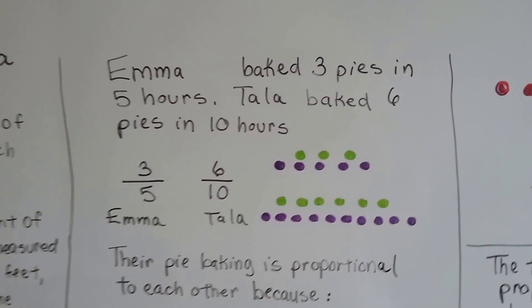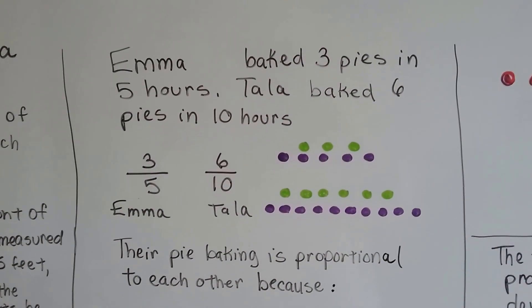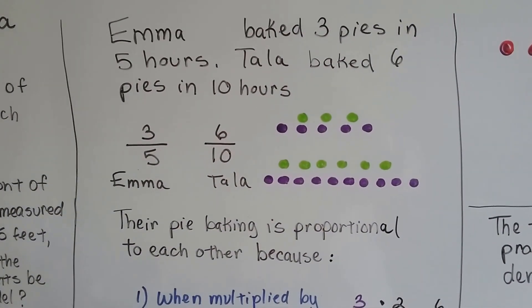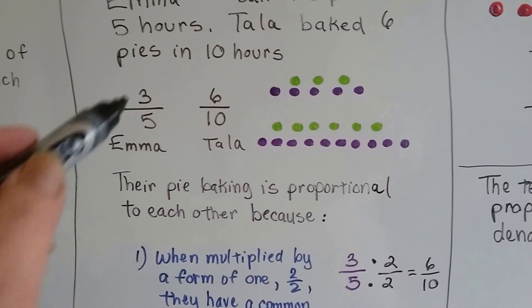Emma baked three pies in five hours. Tala baked six pies in ten hours. Their pie baking is proportional to each other because, if you look at these,